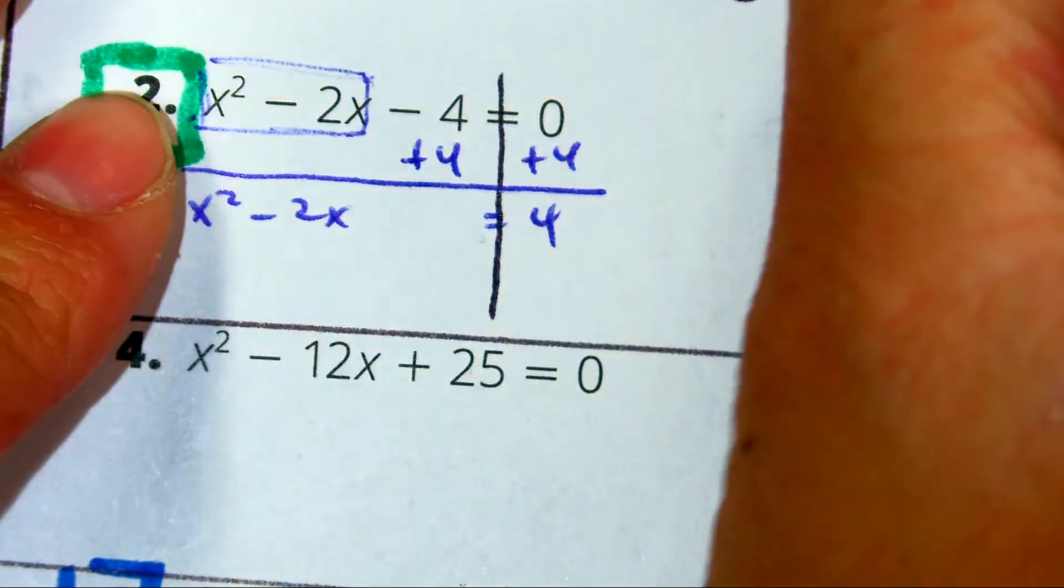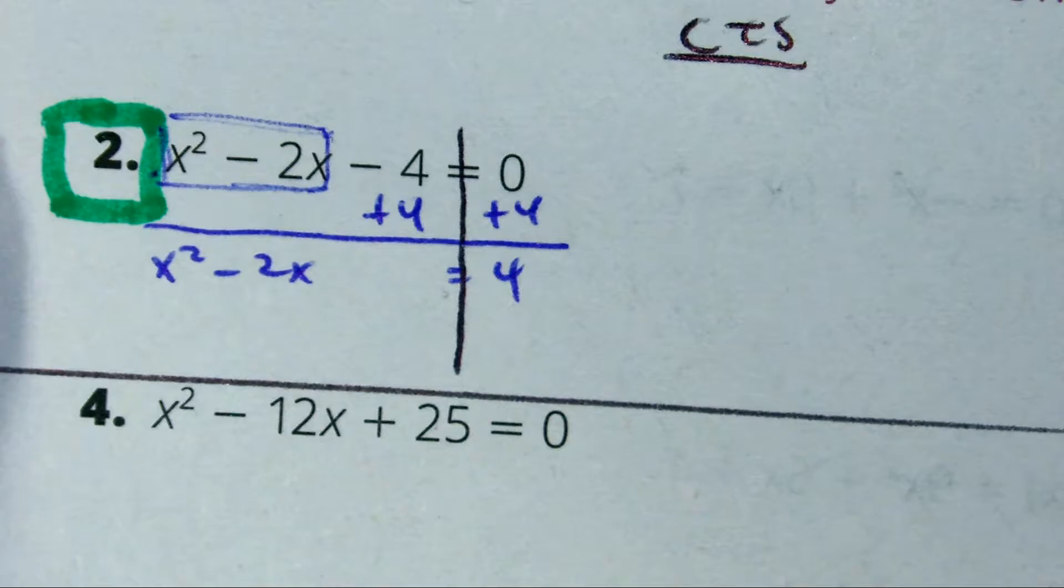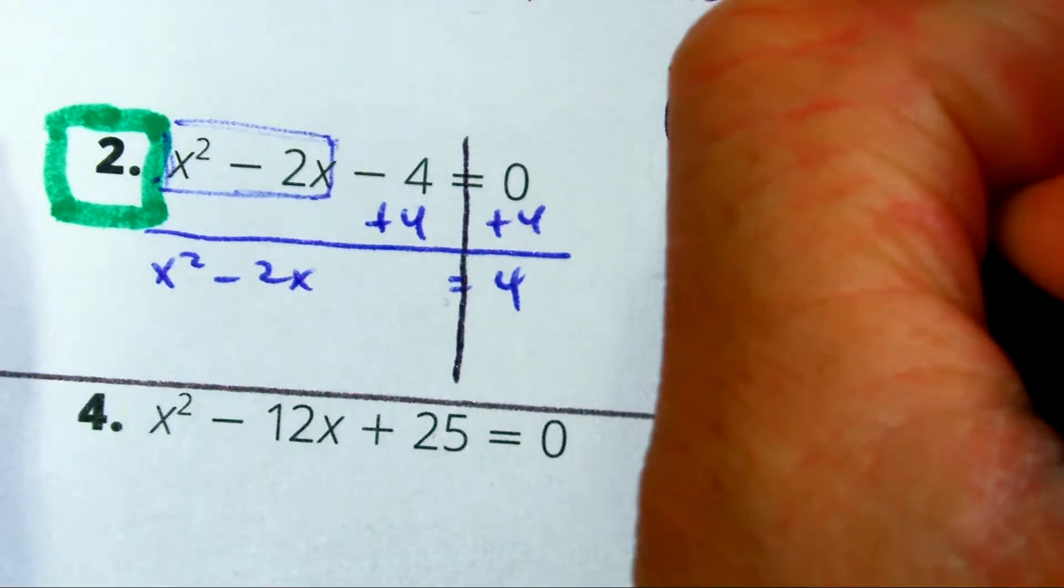Okay, that's the formula for completing the square. So you're going to have to do b over 2 squared.